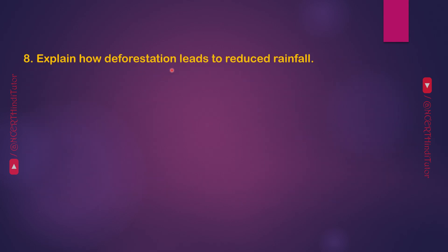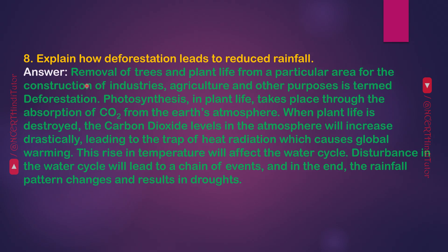Question 8: Explain how deforestation leads to reduced rainfall. Removal of trees and plant life from a particular area is termed deforestation. Photosynthesis in plant life takes place through the absorption of CO2 (carbon dioxide) from the earth's atmosphere. When plant life is destroyed, carbon dioxide levels in the atmosphere increase drastically, leading to the trapping of heat radiation, which causes global warming. This rise in temperature affects the water cycle. Disturbance in the water cycle leads to a chain of events and, ultimately, the rainfall pattern changes, resulting in droughts.